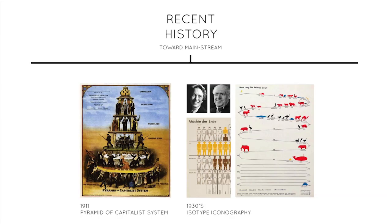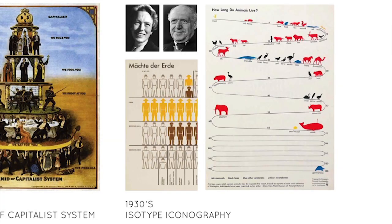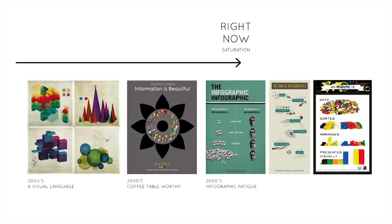Then we come to recent history. On the left is a capitalist pyramid — an interesting example you might be familiar with. What I really want to talk about is isotype, a pictorial system invented in the 1930s by Otto and Marie Neurath in Vienna. They wanted to tell Vienna about itself as a city, so they devised a system of icons to talk about technology, population, and other factors. This example is about the life cycle of animals — different animals have different colour codes running through to the length of time. Particularly one of my favourites, and it set the groundwork for what we have now.